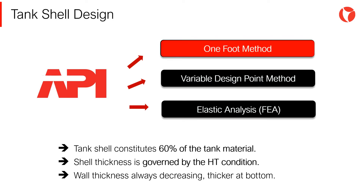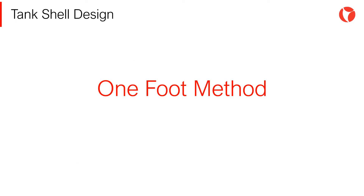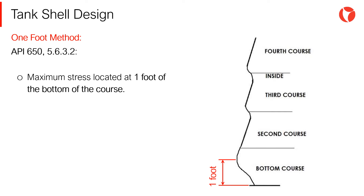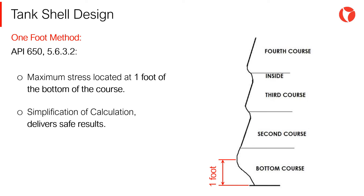From all these three methods, we will study the 1-foot method in this module. The 1-foot method is the most widely used, mainly due to its simplicity and due to the fact that the results are on the safe side. This method determines the shell thickness, considering that the design point for each course is located at 1 foot above the base of the shell course. This simplification in the calculation process is on the safe side. The 1-foot method cannot be used for tanks with diameters larger than 61 meters.